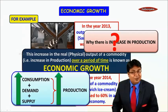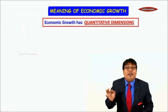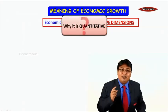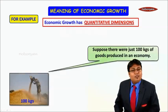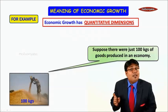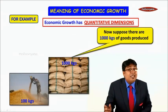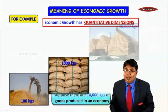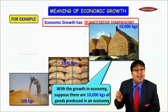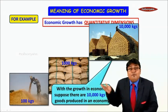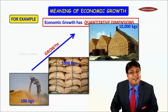The meaning of economic growth has quantitative dimensions. For example, in an economy the production of a good was 100 kgs. From 100 it went up to 1,000 kgs, and then from 1,000 it went up to 10,000 kgs. Moving from 100 to 1,000 to 10,000 — this is known as growth by quantitative dimension. Whenever there is increase in the real output of all goods and services, not only specific goods, it is called economic growth.